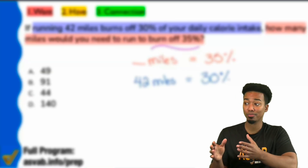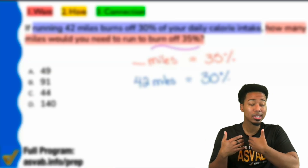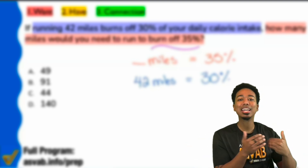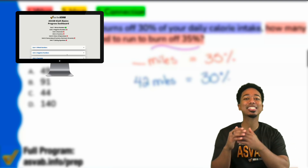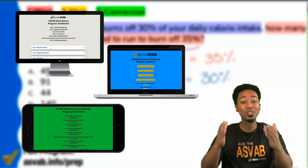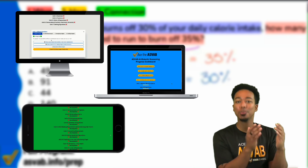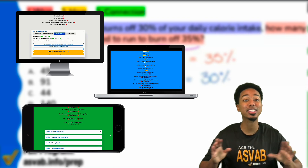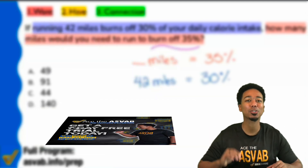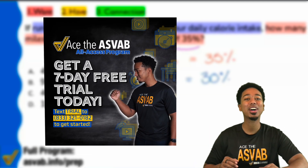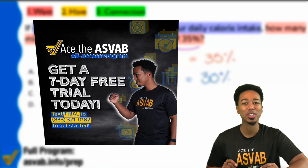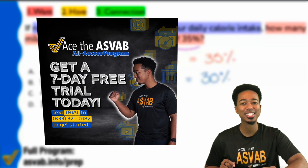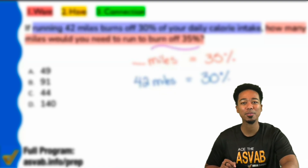The hardest part about practicing for the ASVAB, in my opinion, is knowing when you're ready — knowing that you are good to go and move on from a topic. That's why our full program has a progress dashboard letting you know exactly what you're good at and what you need to work on. You can join our full program free for a full week, no credit card required. Text TRIAL to 833-321-0182 or click the link in the description to get started.